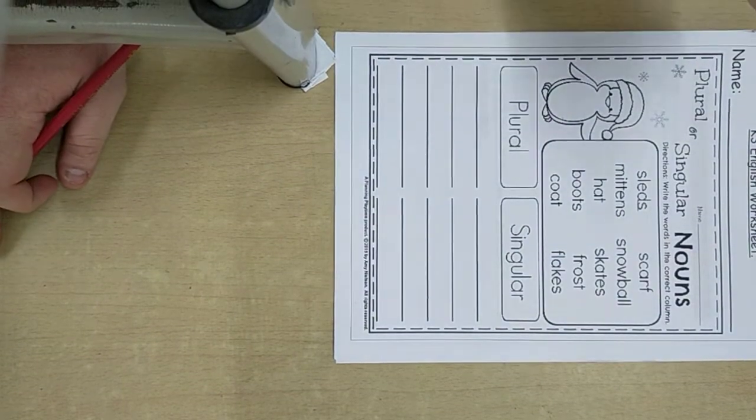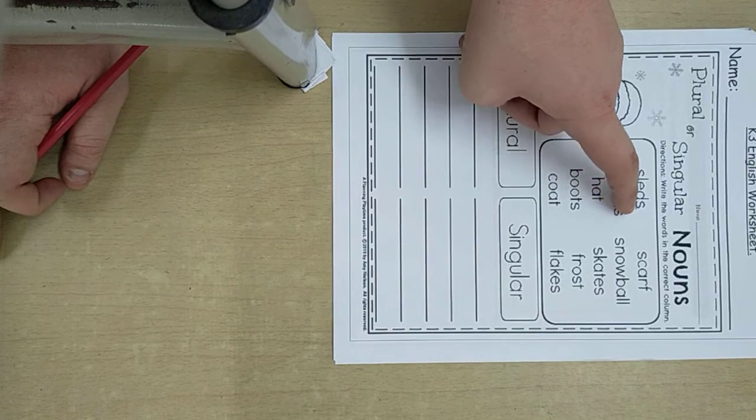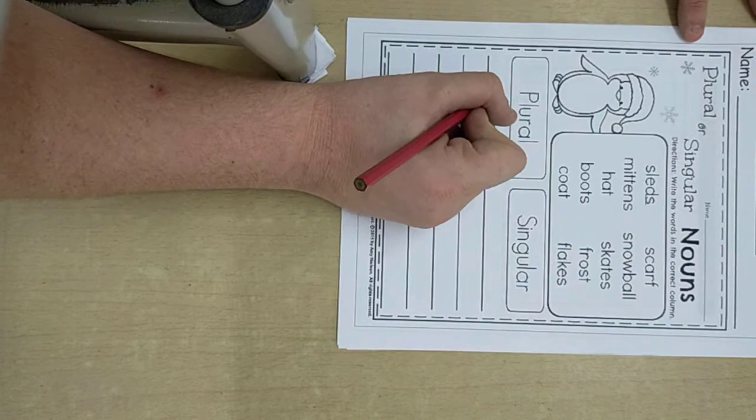Only one sled. But now there are many sleds. So you have to write plural ones in the plural column.